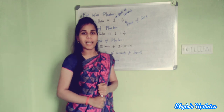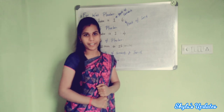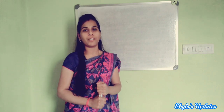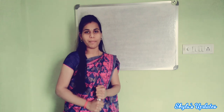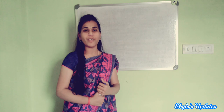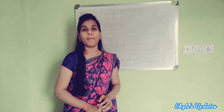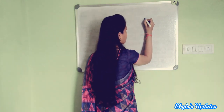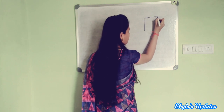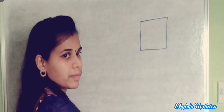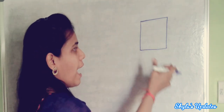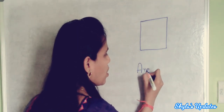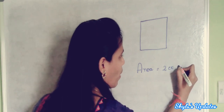For your better understanding, let's see a simple example. Suppose we have to do plaster on a wall and the area is 200 square meters. The ratio we are going to use is 1 to 6 and the thickness would be 12 mm. Consider this is a wall and in this wall we are going to do plaster with an area of 200 square meters.